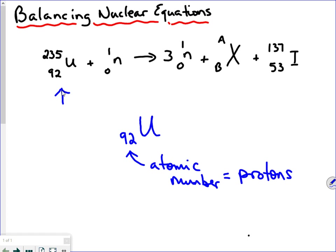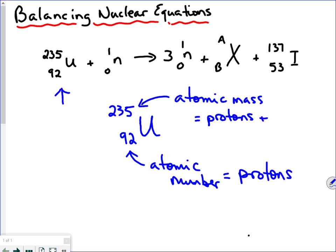What is variable is the number on the upper left — that 235. That is what we call the atomic mass. The atomic mass of an atom is made up of the protons, which is a fixed number, plus the neutrons. But the number of neutrons that an atom possesses can be variable. Different atoms of the same element can have different numbers of neutrons. We use the word isotopes in science. This happens to be the isotope of uranium where the protons plus the neutrons equals 235.